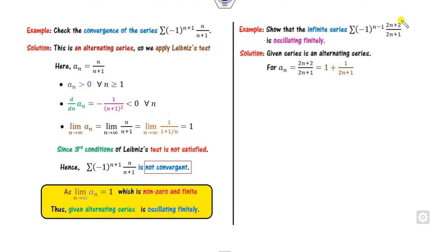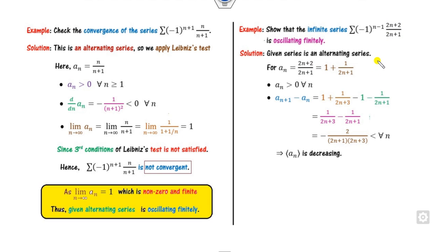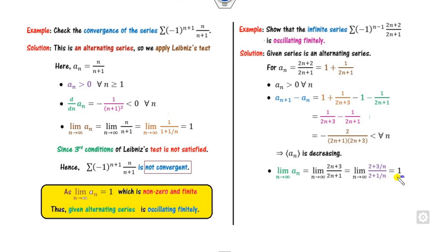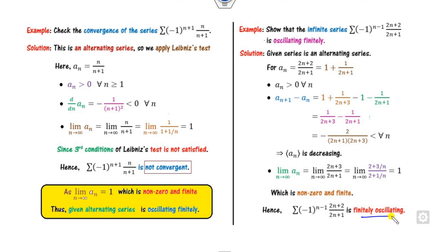Similarly for the second part: again a_n is positive, so the first property is satisfied. Computing a_{n+1} minus a_n, taking LCM, gives a result less than 0 for all n, so it is decreasing. However, the limit is 1, which is non-zero. Therefore the series is not convergent. Since the limit is finite, it is a finitely oscillatory series. If the limit were infinite, we would call it infinitely oscillatory.